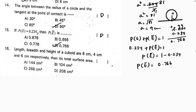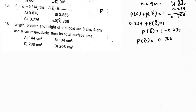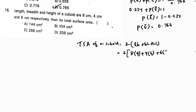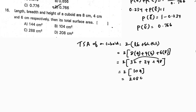Next: find the total surface area of a cuboid with length = 8, breadth = 4, height = 6. TSA = 2(lb + bh + hl) = 2(8×4 + 4×6 + 6×8) = 2(32 + 24 + 48) = 2(104) = 208 cm². Correct option is D.